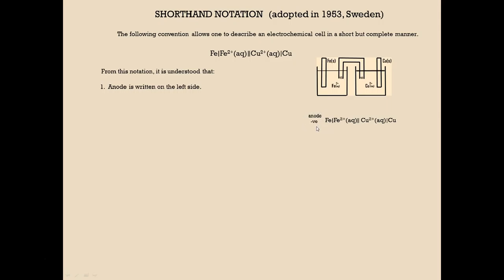So there are several things understood from this notation. First, the anode is written on the left side, as shown here, and the anode is negative. Now you don't write this in here, but it's understood that we always write the anode first where oxidation occurs.